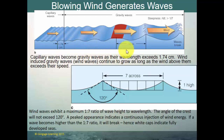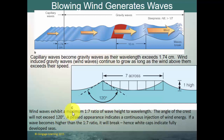Wind waves exhibit a maximum 1-to-7 ratio of wave height to wavelength. The angle of the crest will not exceed 120 degrees. A peaked appearance indicates a continuous injection of wind energy. If a wave becomes higher than the 1-to-7 ratio, it will break, and that's where you get white caps. Winds will look like these peaks in the water until you get past the 1-to-7 ratio, and then you'll start getting white caps — that occurs in what is known as fully developed seas.